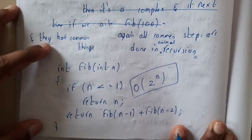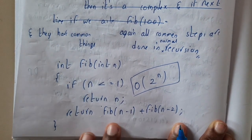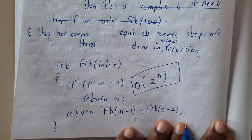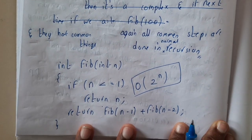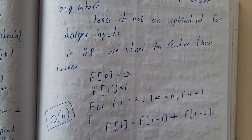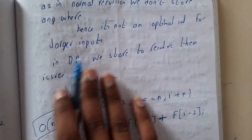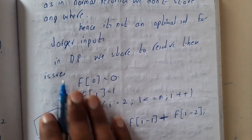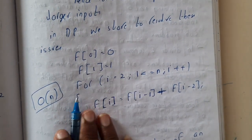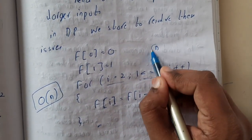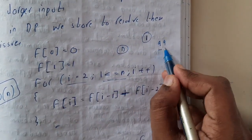Here is the normal Fibonacci algorithm: if n <= 1, return n; else return fib(n-1) + fib(n-2). No values are stored — it just recurses back until it reaches the base case. This is not an optimal solution for larger inputs. In dynamic programming, we resolve this by storing results: Fibonacci(0)=0, Fibonacci(1)=1, then compute from index 2 to n using a loop.